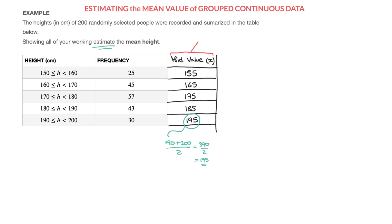More generally, the mid-value can always be found by calculating the average of the lower bound of the class interval and the upper bound of a class interval, where LB stands for lower bound and UB stands for upper bound.